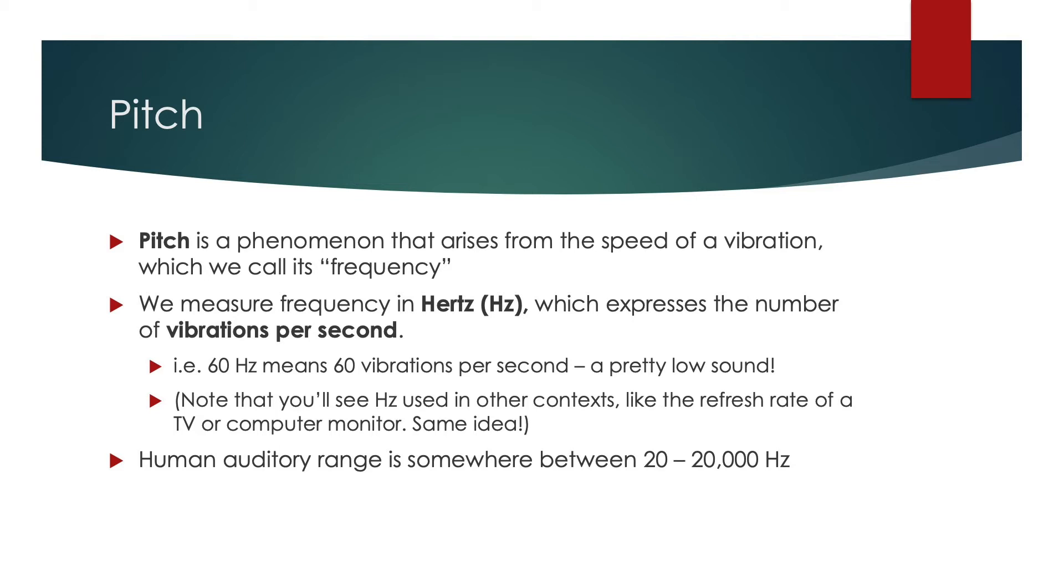Now that sounds really, really fast, but it's actually very low. It's actually very slow in the grand scheme of things. It produces a pretty low tone. The human auditory range, as it says at the bottom of the slide, is somewhere between 20 hertz, which is very low rumbling, all the way up to about 20,000 hertz, which is a high whistle or a whine or an electrical buzz.